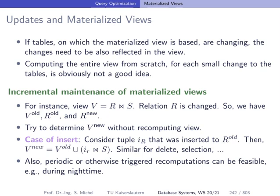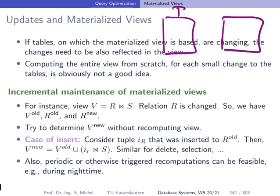A few more words on updates. The problem — and benefit — of materialized views is that they are materialized. There is always a trade-off: materializing too many things incurs not only storage cost but also maintenance cost, much like creating many index structures. There is the concept of incremental maintenance: consider having relations R and S for which you have created and materialized their join.